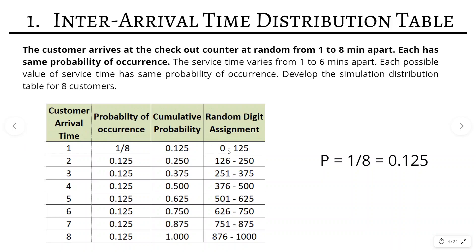The logic for random digit assignment is straightforward. The first cumulative probability is 0.125, so we assign digits from 000 to 125. For the second, we start from 126 and go up to 250. Then 251 to 375, then 376 to 500, then 501 to 625, then 626 to 750, then 751 to 875, and finally 876 to 1000. This completes the inter-arrival time distribution table.